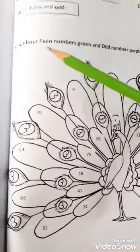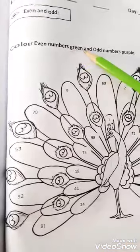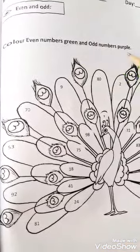Now let's see the question. Color the even numbers green and odd numbers purple.